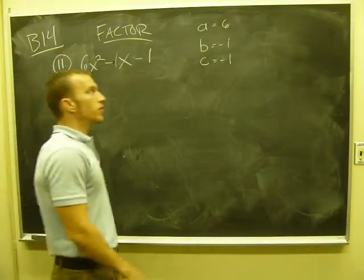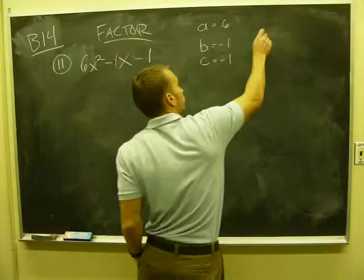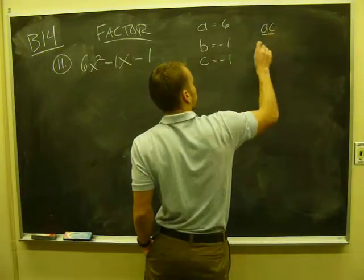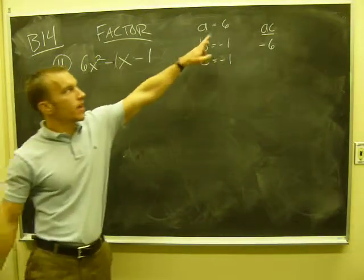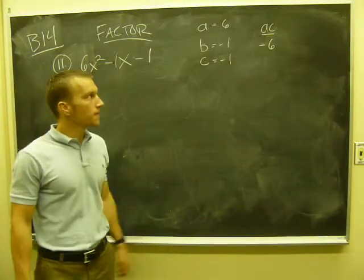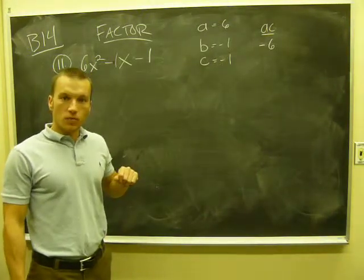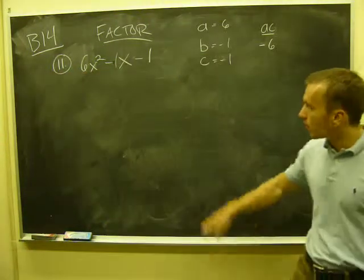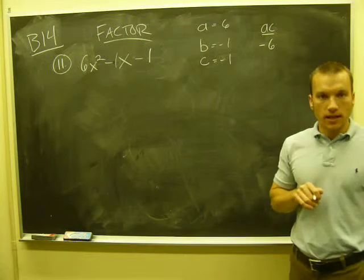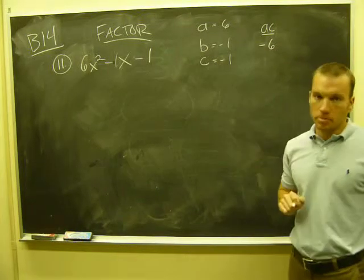All right, what we want to do is figure out what AC is. AC would be negative 6. That is your a times your c, negative 6. Your b is negative 1. So the next step is to find two numbers that multiply together to give you AC at negative 6 and add together to give you your b term.